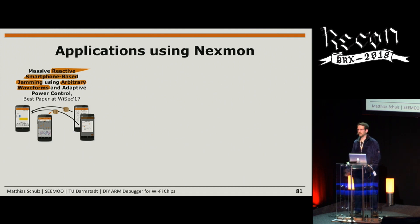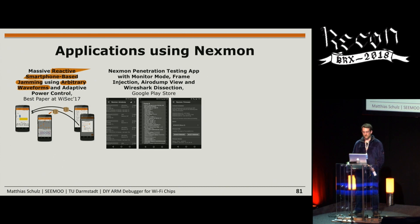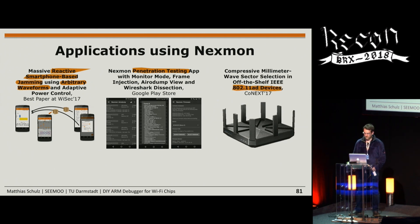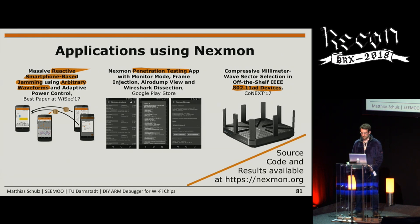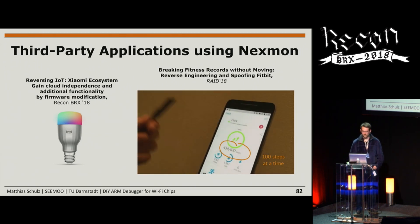Another application available on the Google Play Store is the Nexmon penetration testing app. It uses monitor mode and frame injection to run tools like error dump view and Wireshark dissection, plus several attacks, directly from your pocket. The app is somewhat outdated — for newer chip support, build it from the Nexmon repository. We also patched firmware for 802.11ad devices operating in the 60 GHz band.